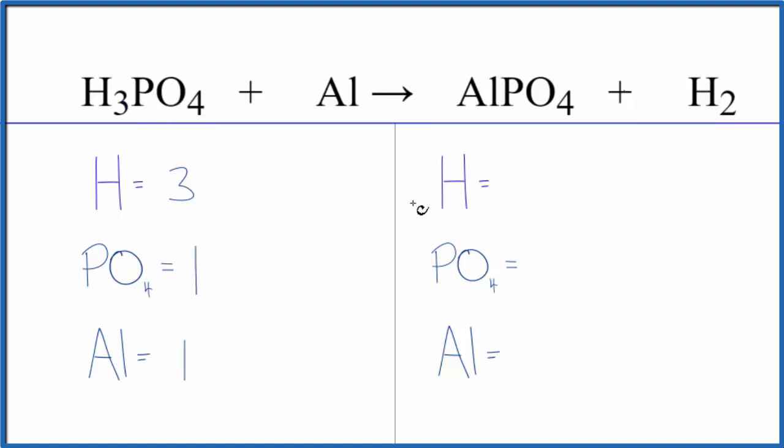Aluminum, we have one of those. Product side, two hydrogens, just the one phosphate, and one aluminum. So everything looks pretty good except the hydrogens.